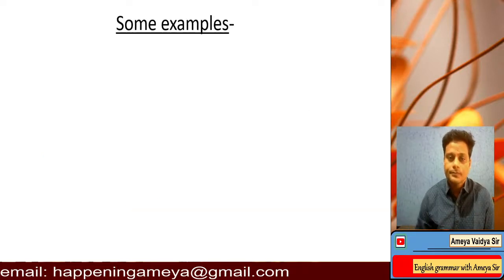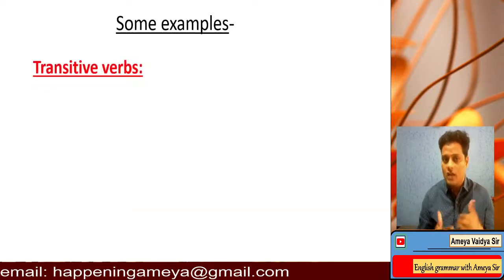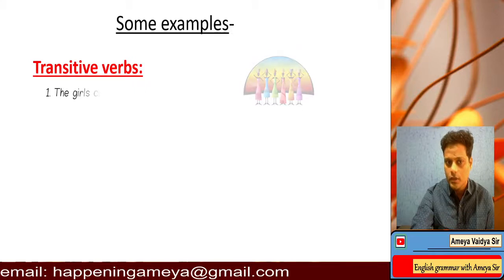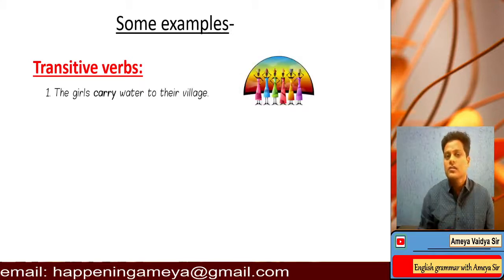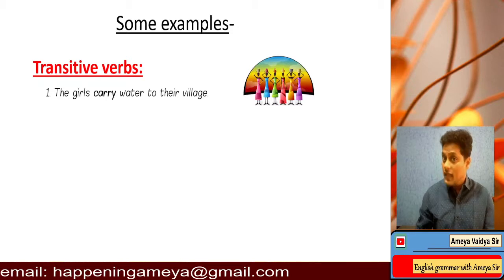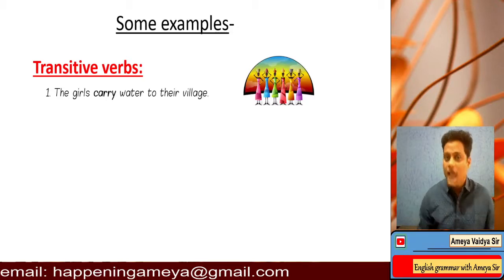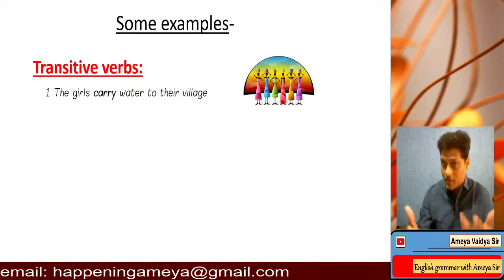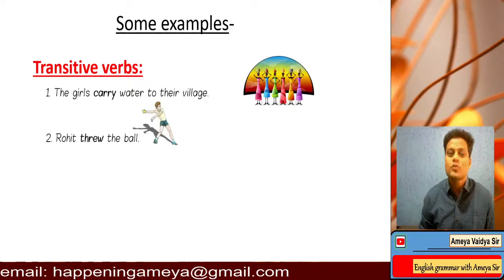Let's proceed with some examples of transitive verbs. Consider this example: 'The girls carry water to their village.' The girls carry — carry what? Water to their village. So 'carry,' the verb here, is transitive. It demands an object. Next one: 'Rohit threw the ball.' Rohit threw what? The ball. By studying these examples, the concept is getting clearer.